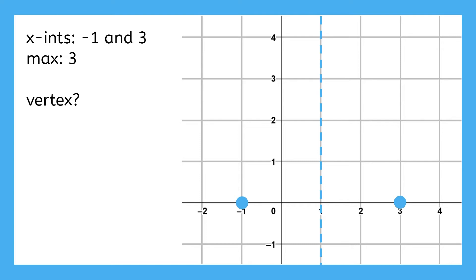We also know that the only maximum on a parabola is its vertex. So the vertex must be somewhere at y equals three. The vertex is on both of these lines and there's only one such point at one comma three.